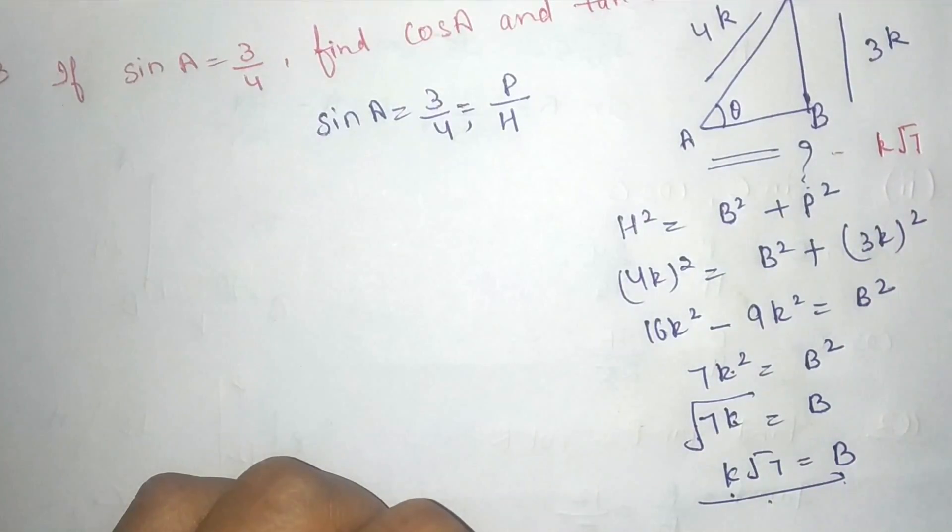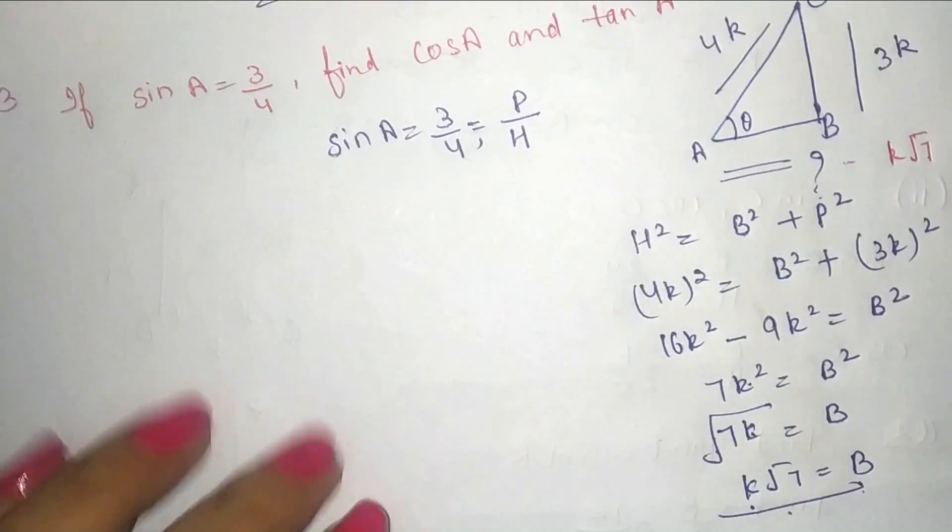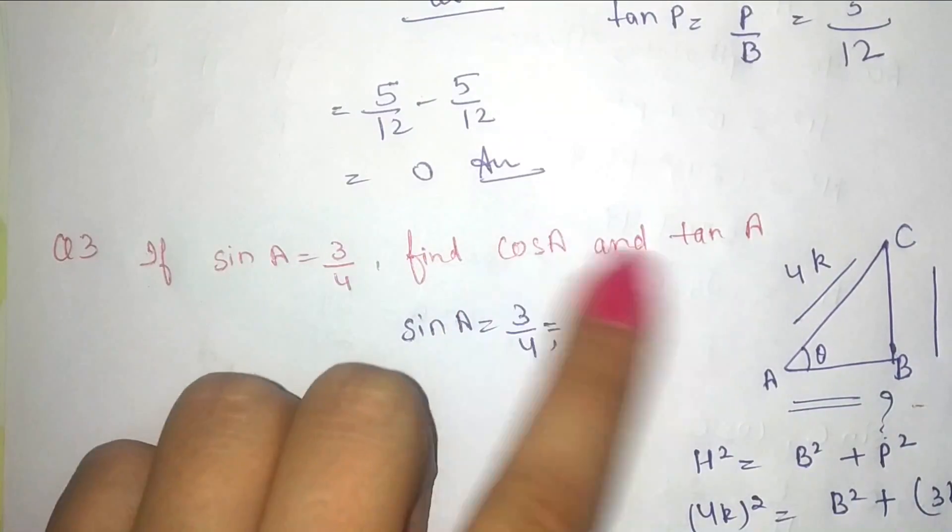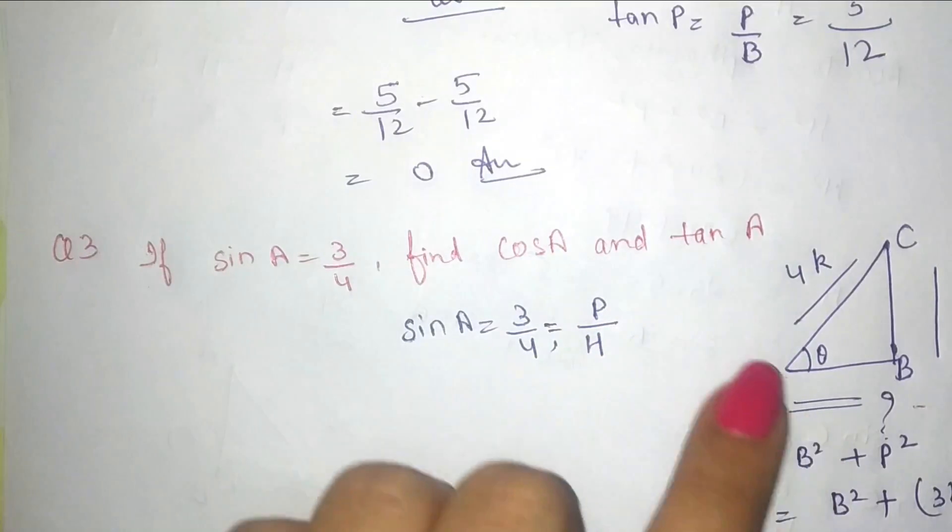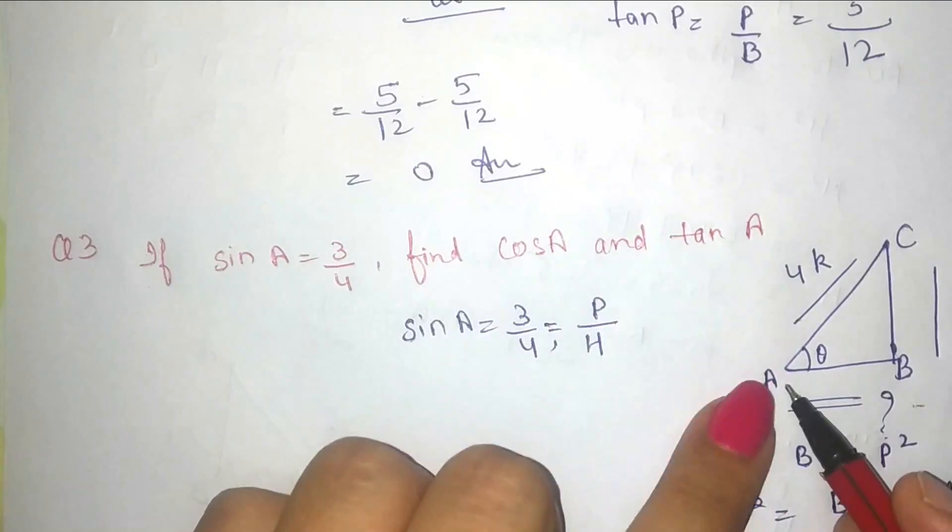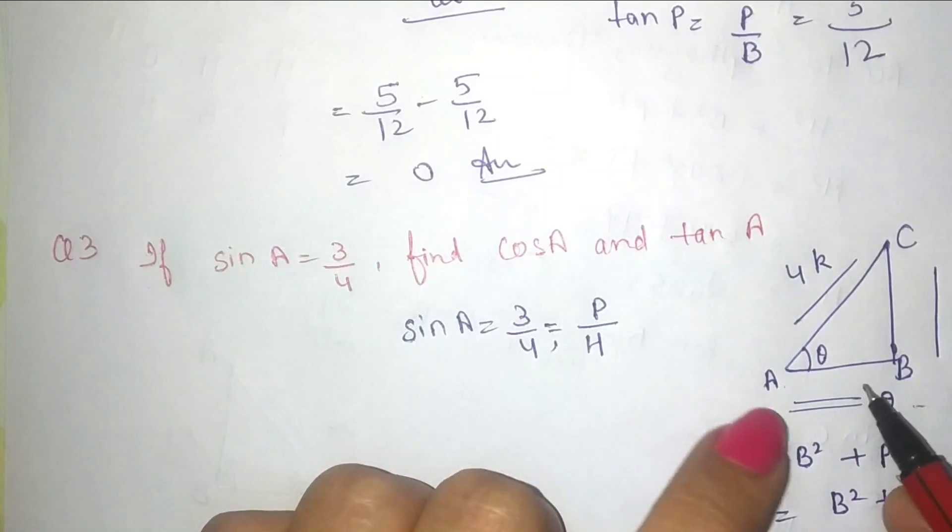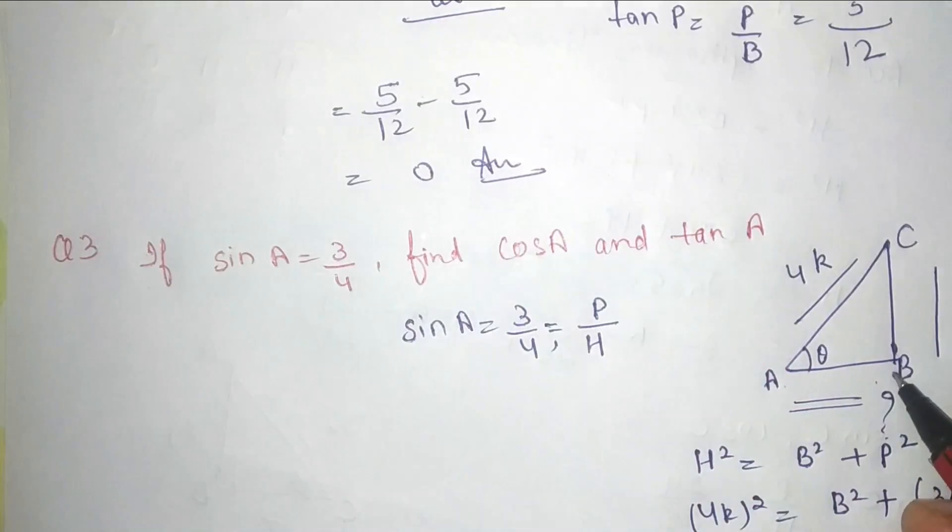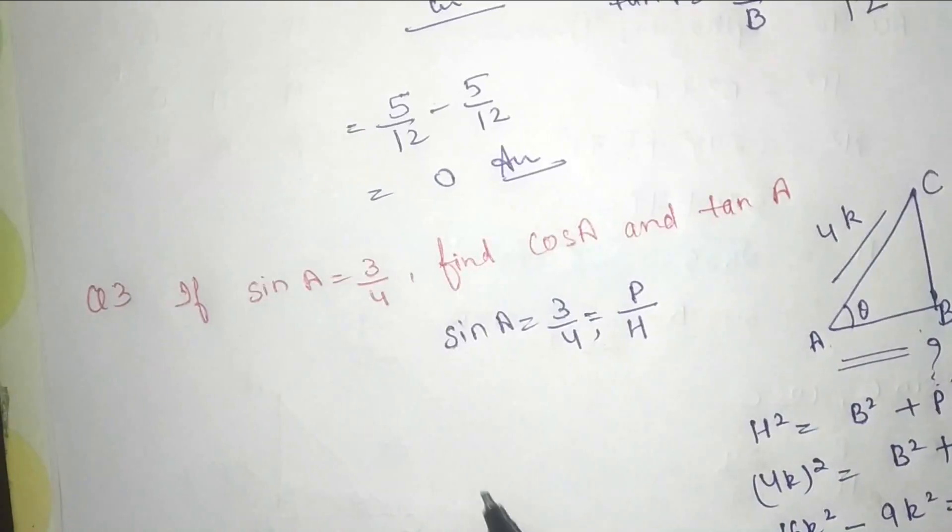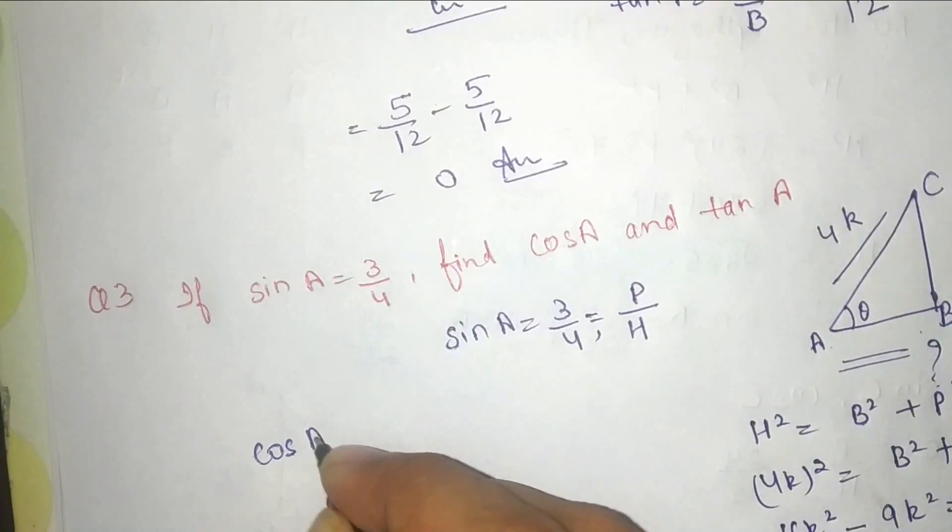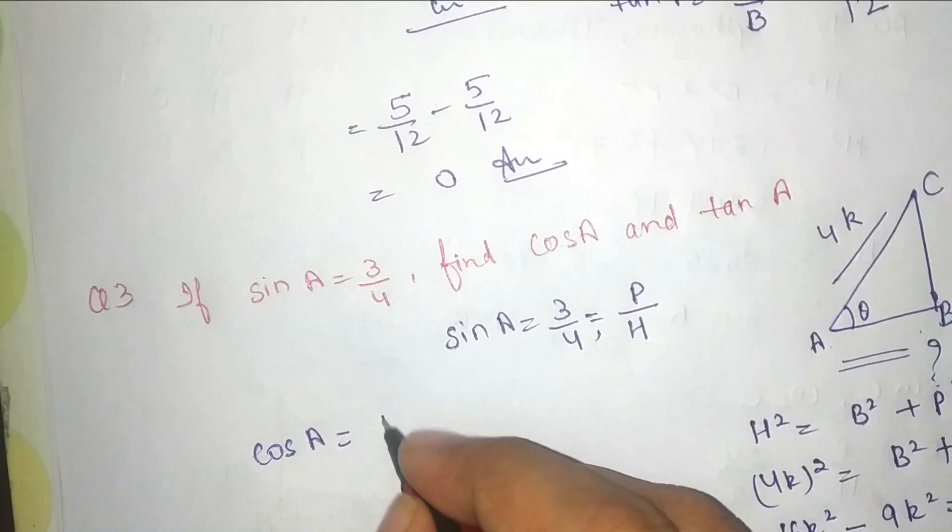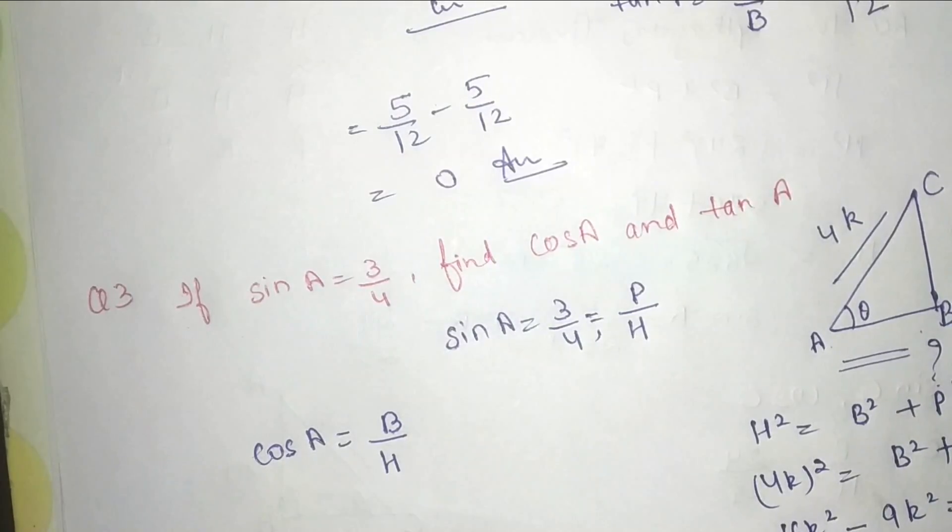So base ki value humare paas kya hai jo humne find out ki hai, that is k root 7. So it means yeh value humne find out ki hai. Ab ismeh dusri cheezein humneh cos A and tan A we have to find out. Theta A hai toh triangle meh yeh base hai, yeh perpendicular hai. Humneh dusra triangle nahi banana ki zarurat hai. So cos A is equal to B upon H and tan A is equal to P upon B.